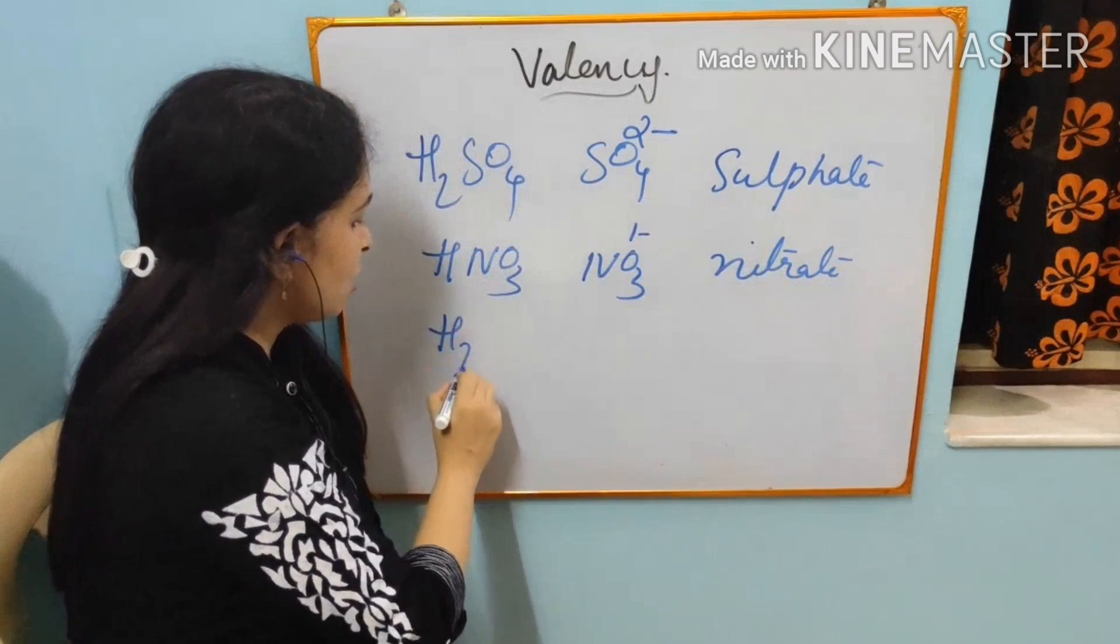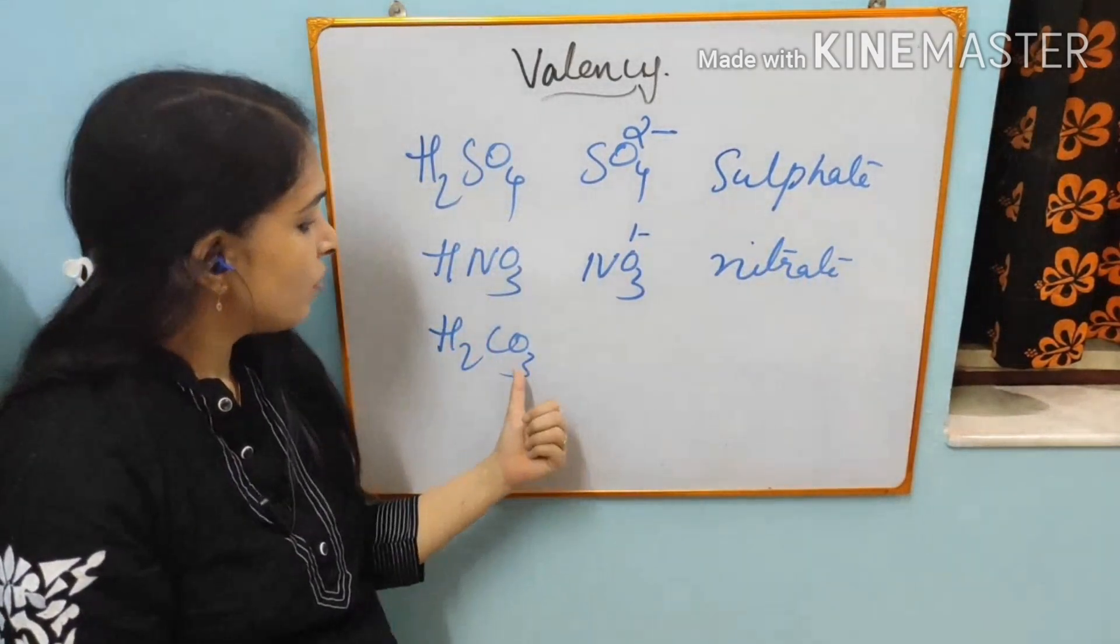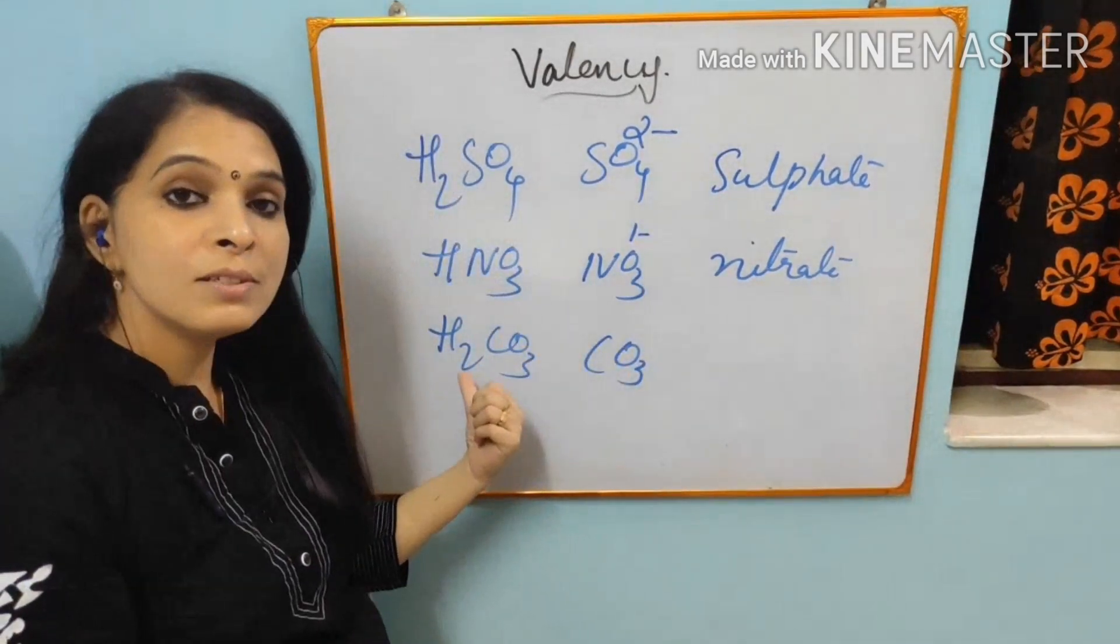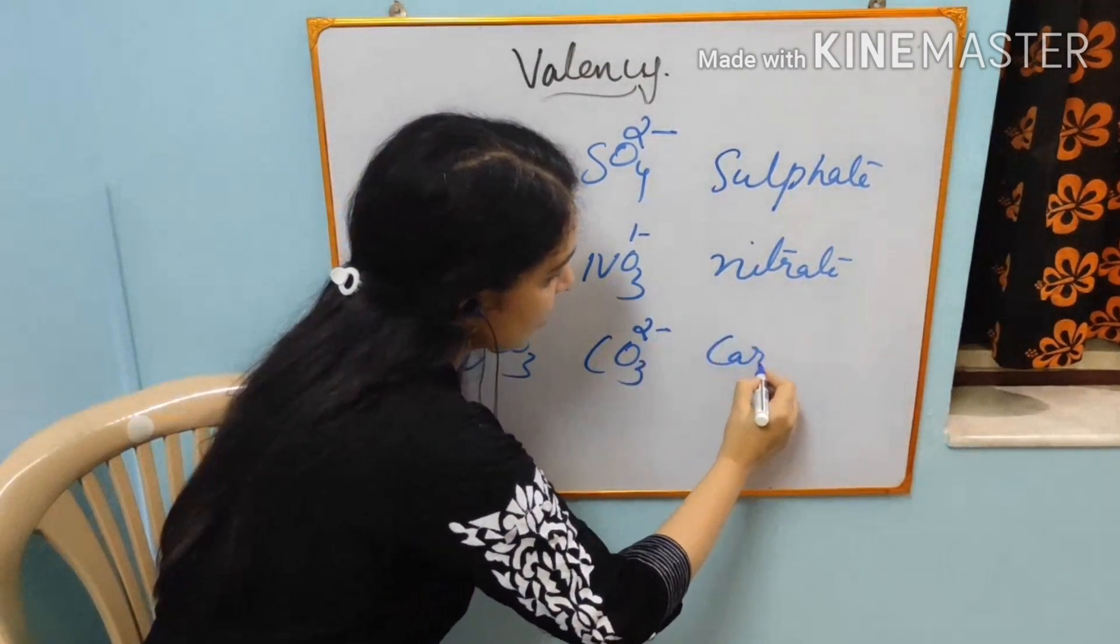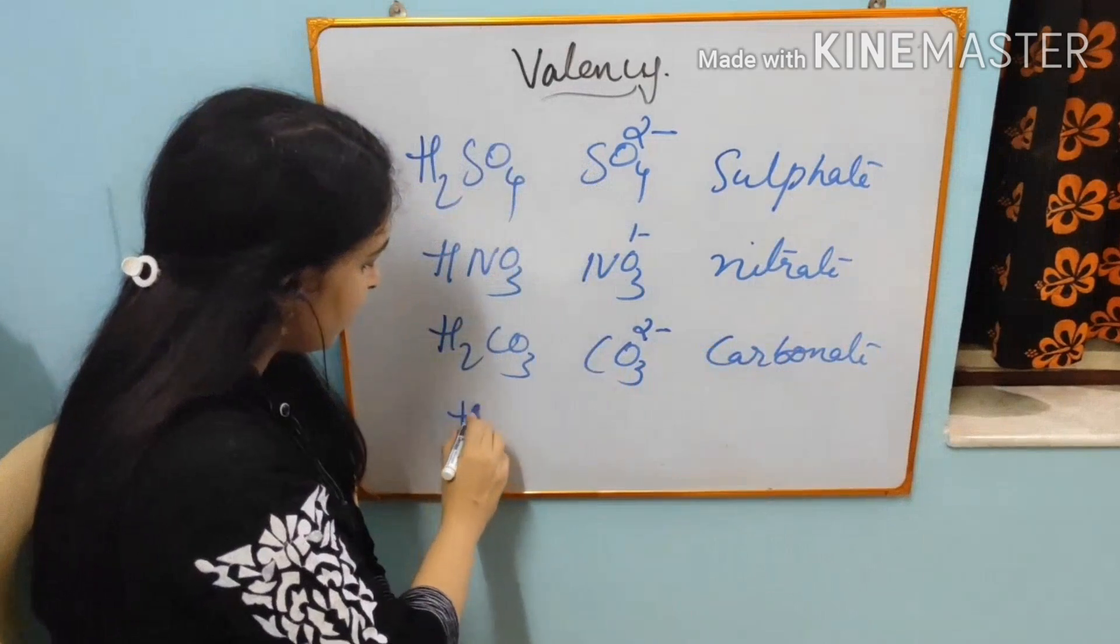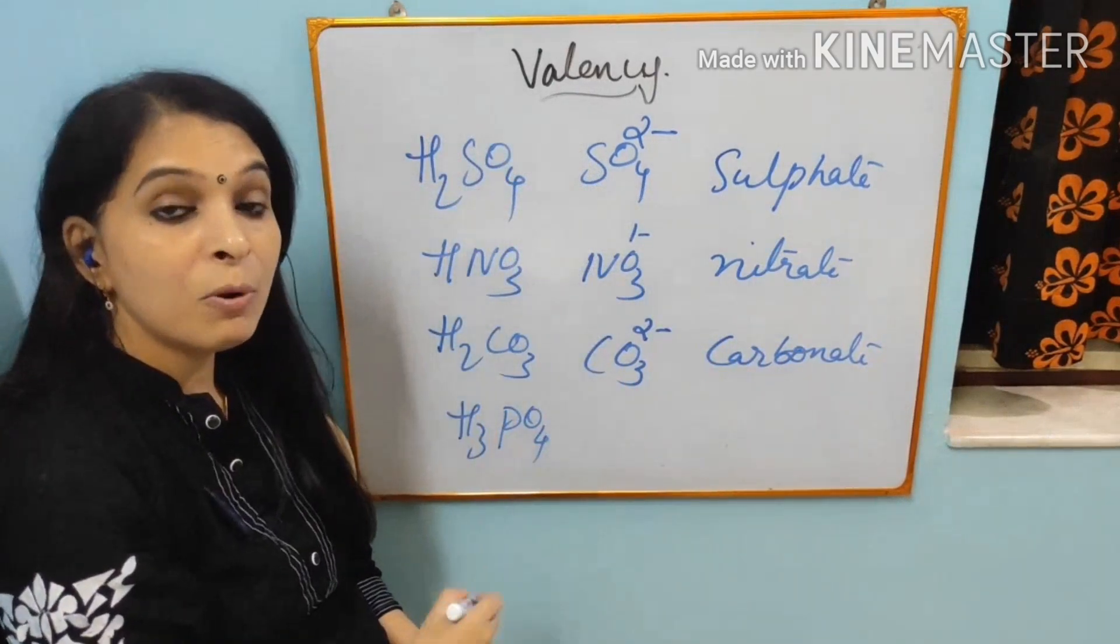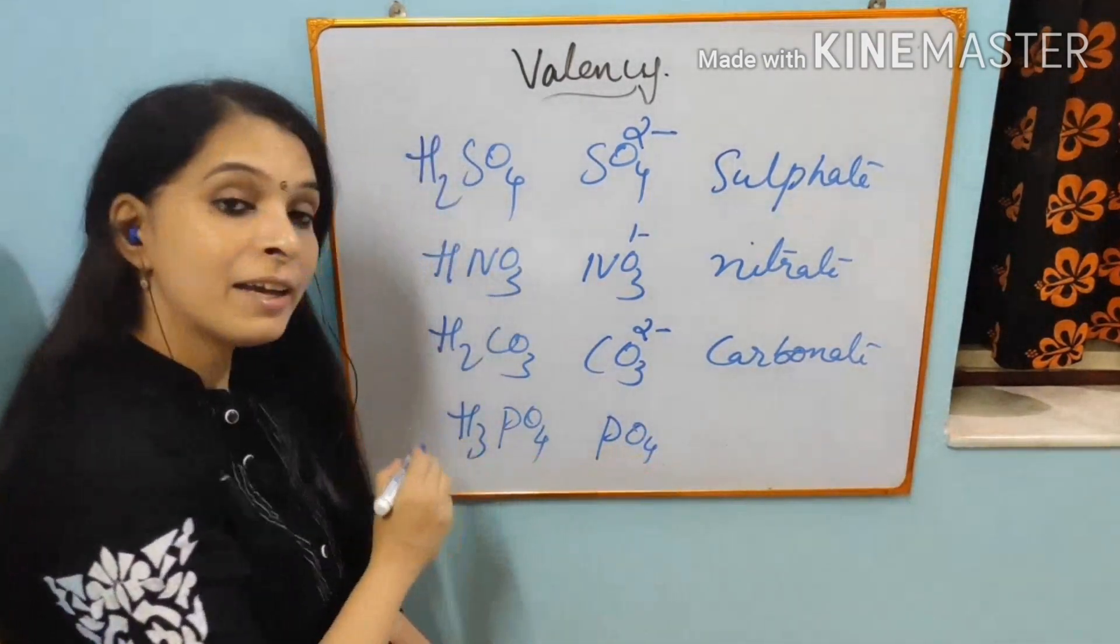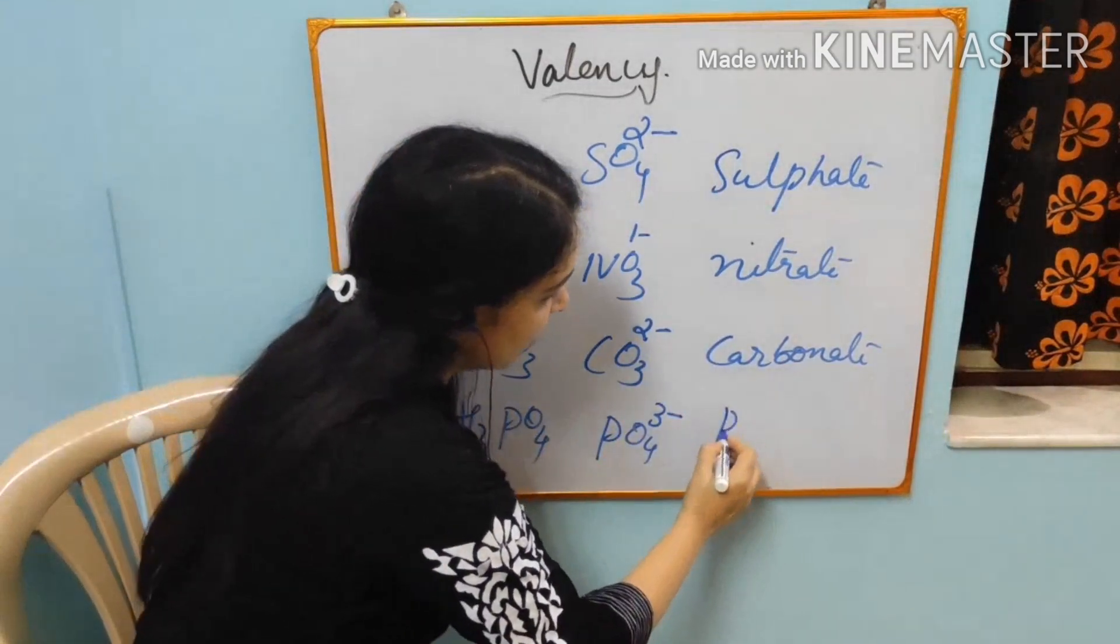Next is H2CO3, that is carbonic acid. Polyatomic ion we get from this is CO3. Number of hydrogen, 2. So the charge will be 2 minus. Name is carbonate. Next is H3PO4, that is phosphoric acid. The polyatomic ion we get from this is PO4. Number of hydrogen is 3. So the charge will be 3 minus. Name is phosphate.